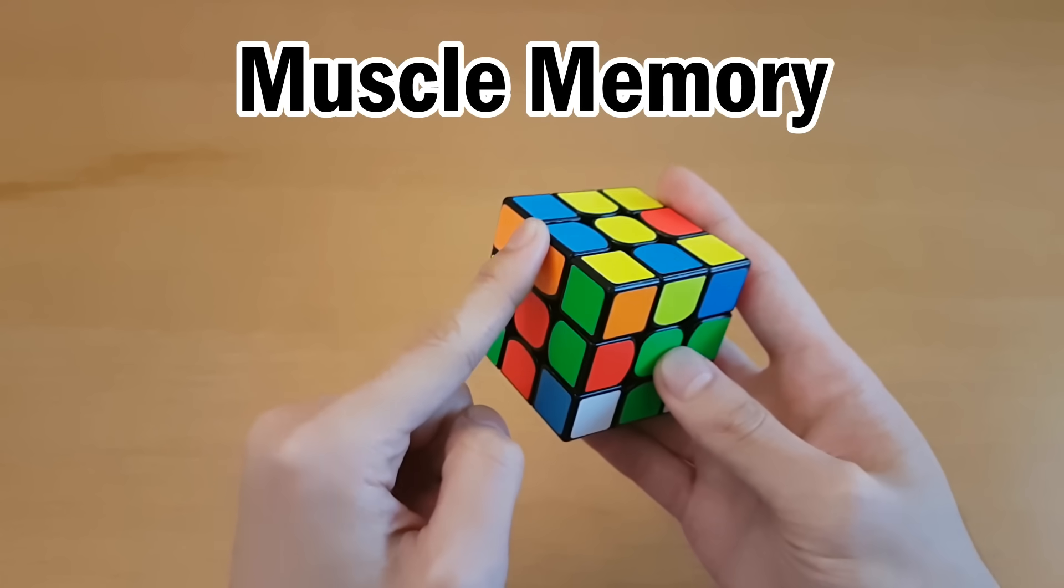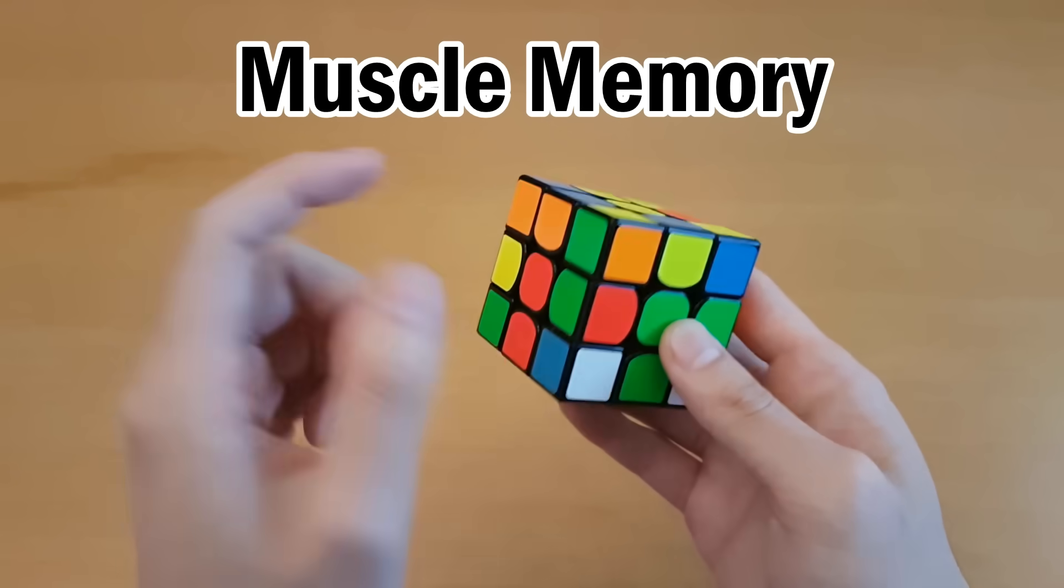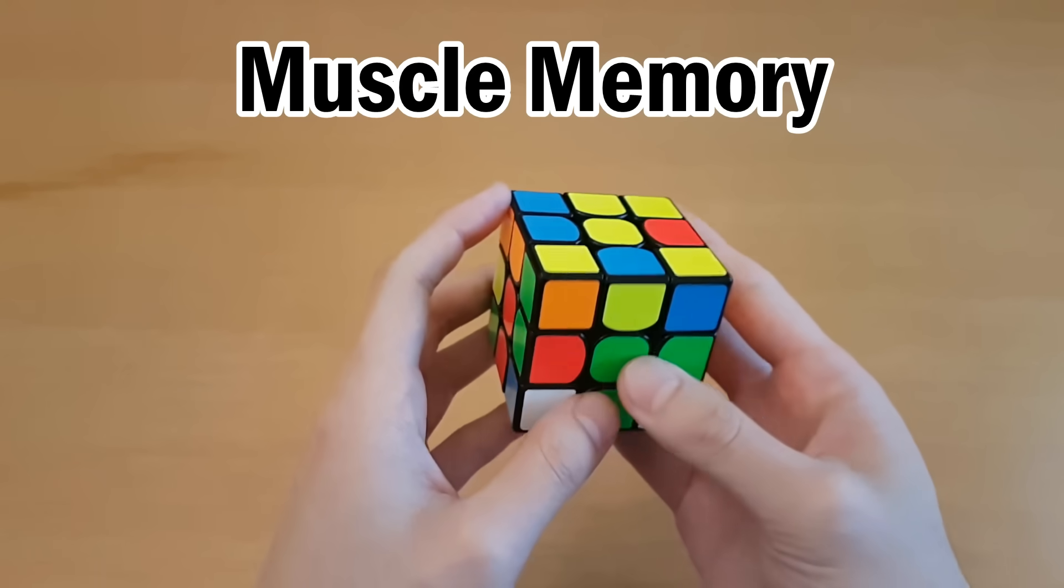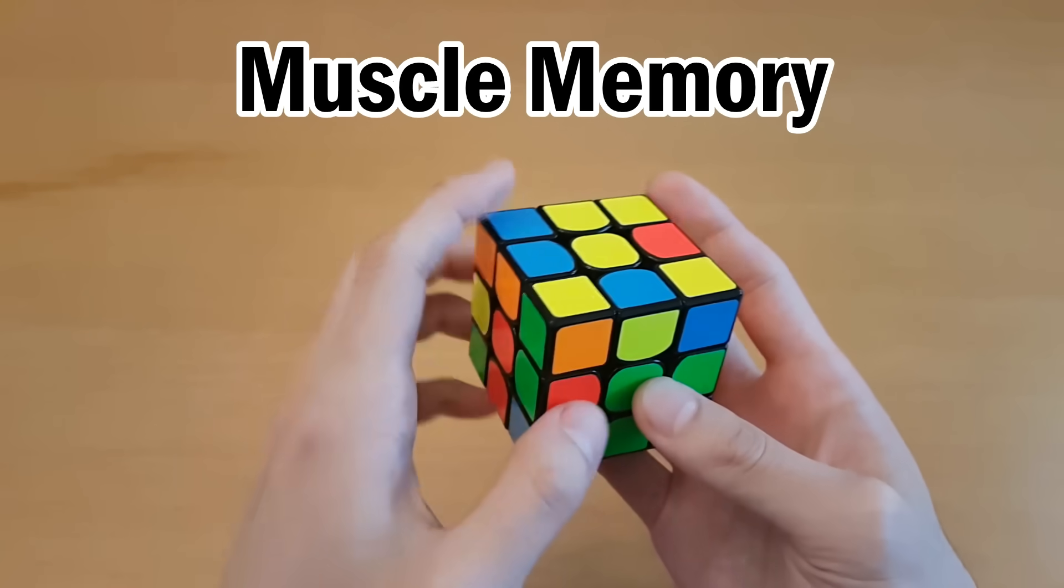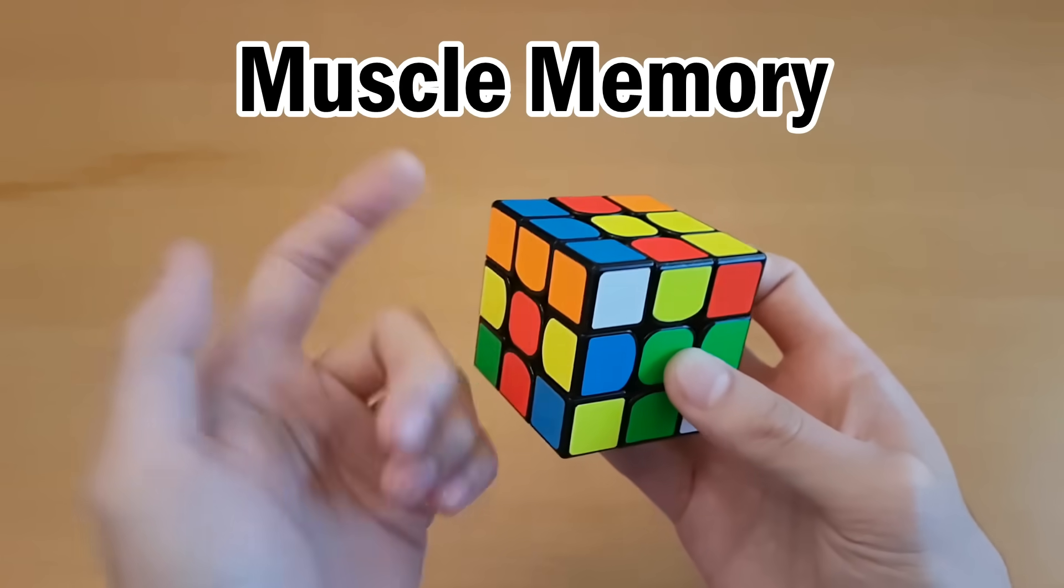Next, anytime you see two pieces from an F2L pair, you have to be able to instantly know how to insert this into the correct slot. In my Advanced F2L video, I told you how to compare stickers here to learn how to pair these up like that. But that's just the first step.